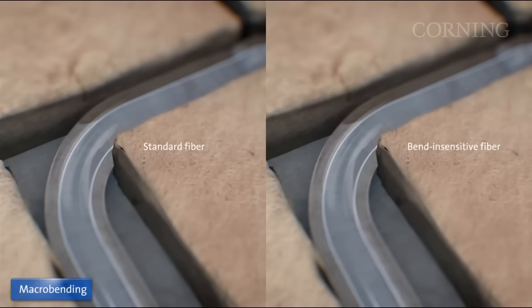Macrobending is the attenuation associated with bending or wrapping the fiber. Both of these conditions can allow light to leak out of the fiber, meaning some of the original signal is lost.